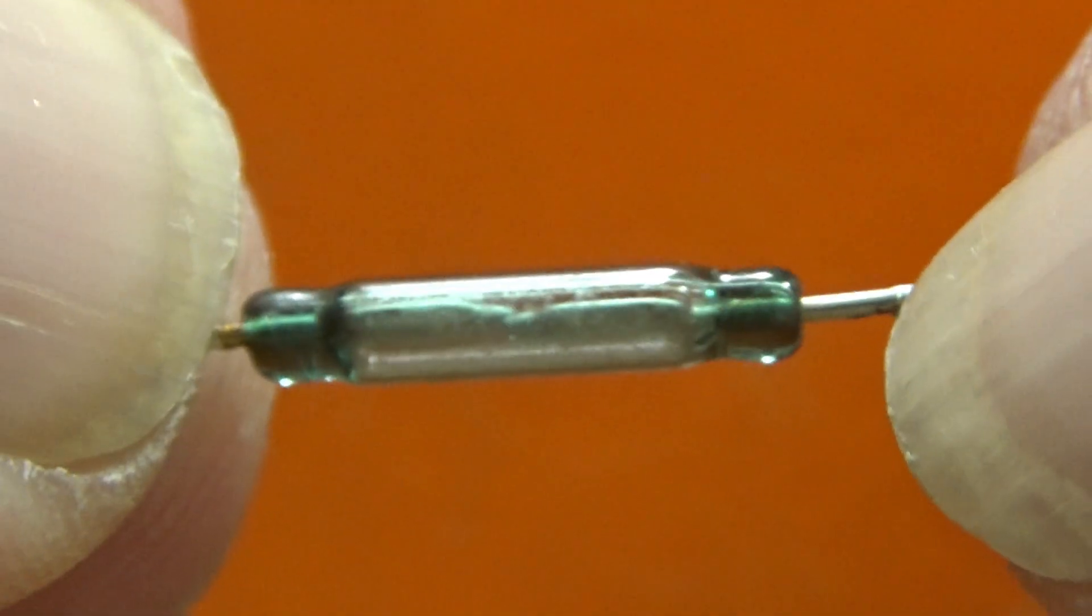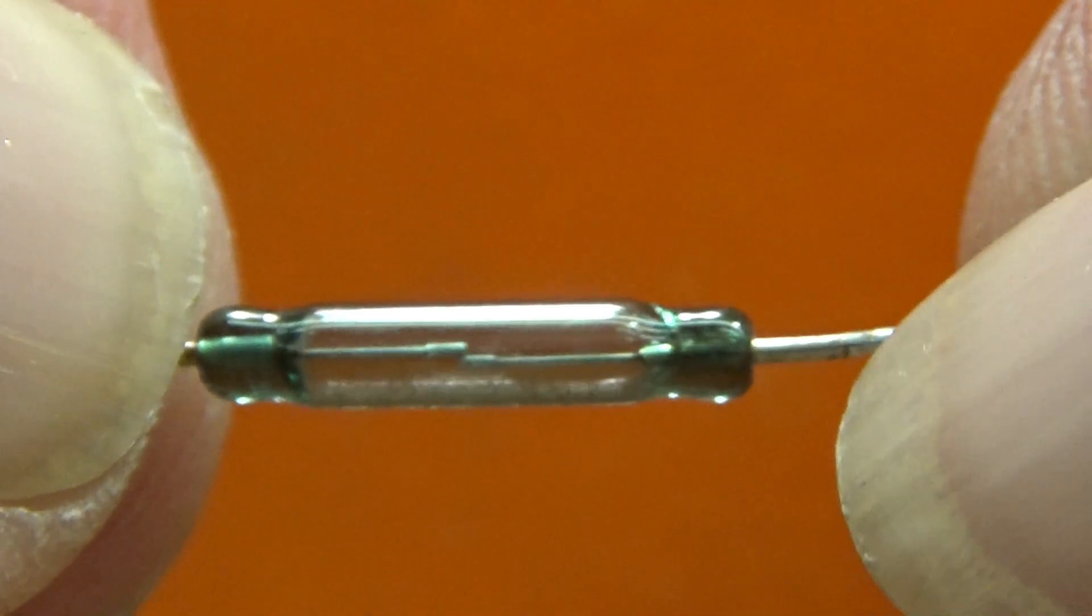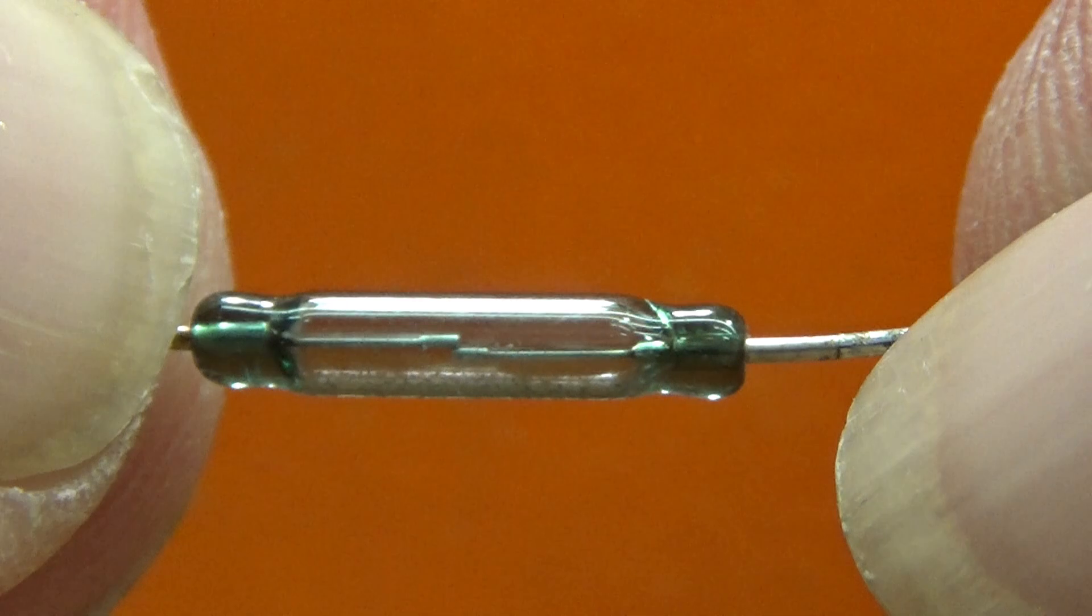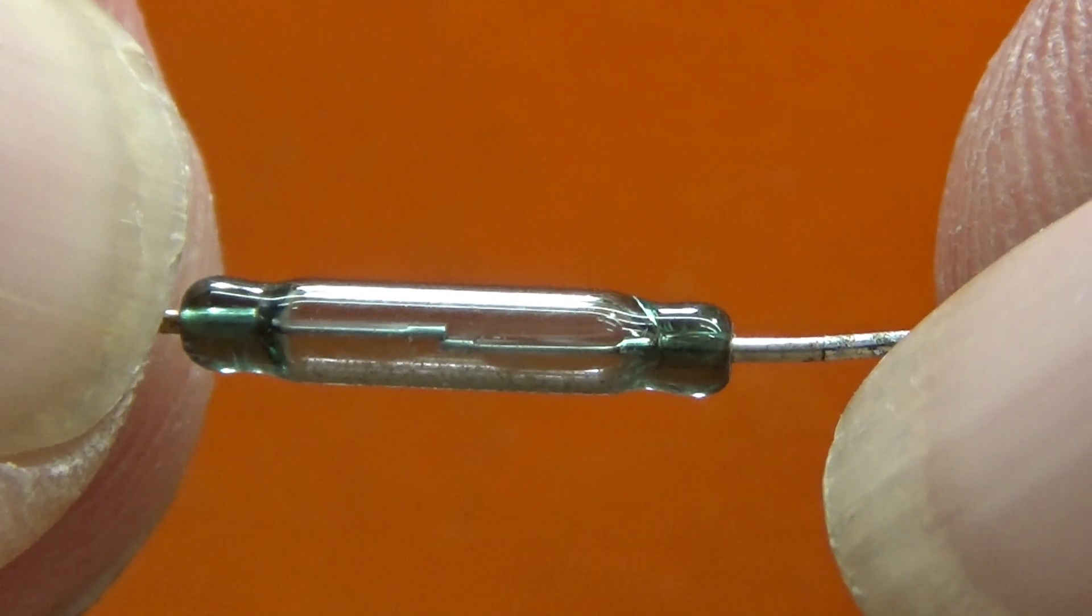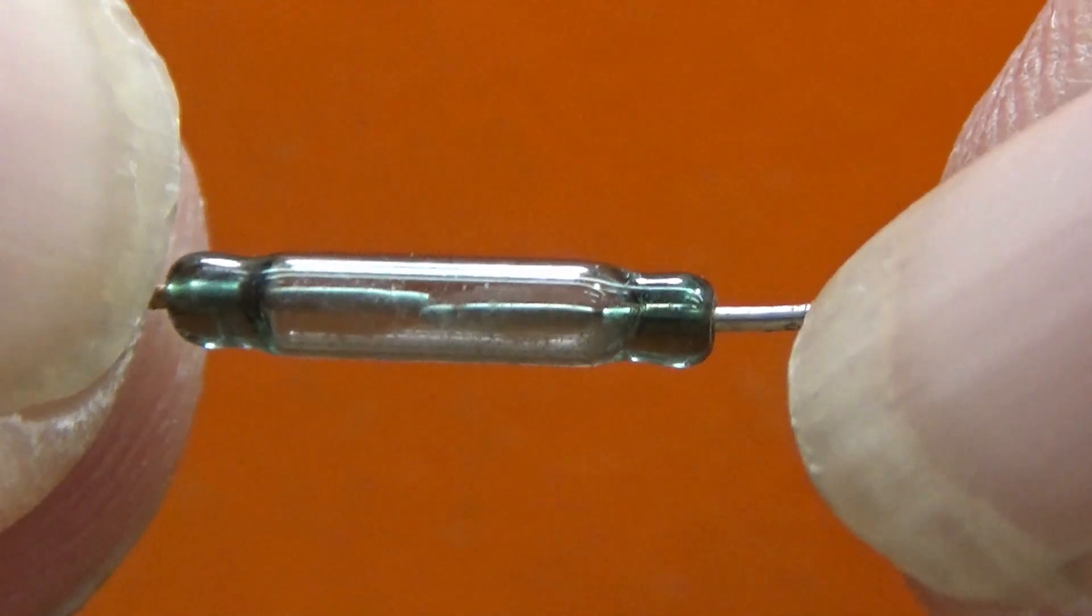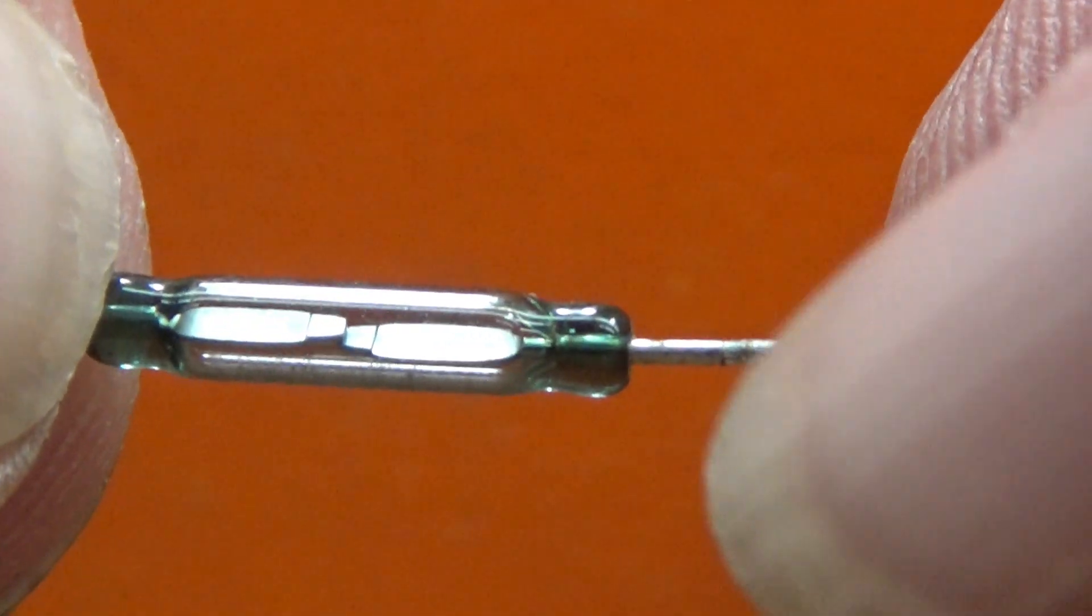So even though they look perfectly OK and they sound OK and they move and they touch together, there is actually no electrical contact due to the tarnishing on the actual contacts.